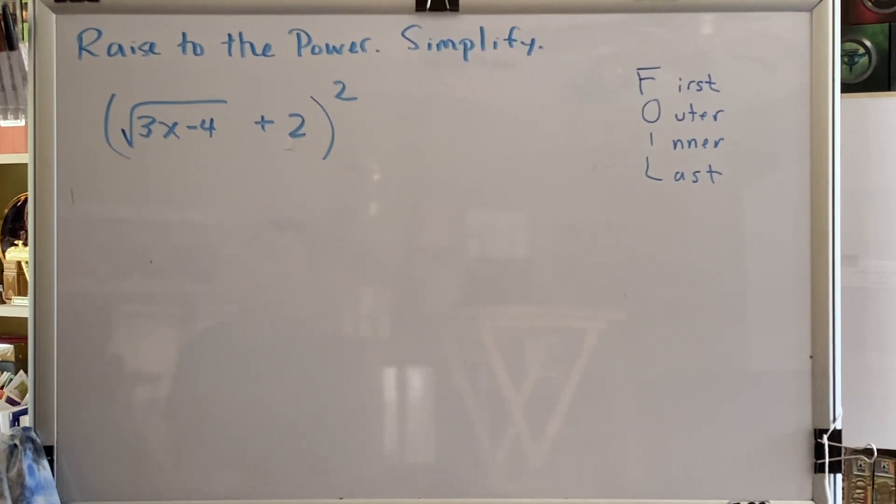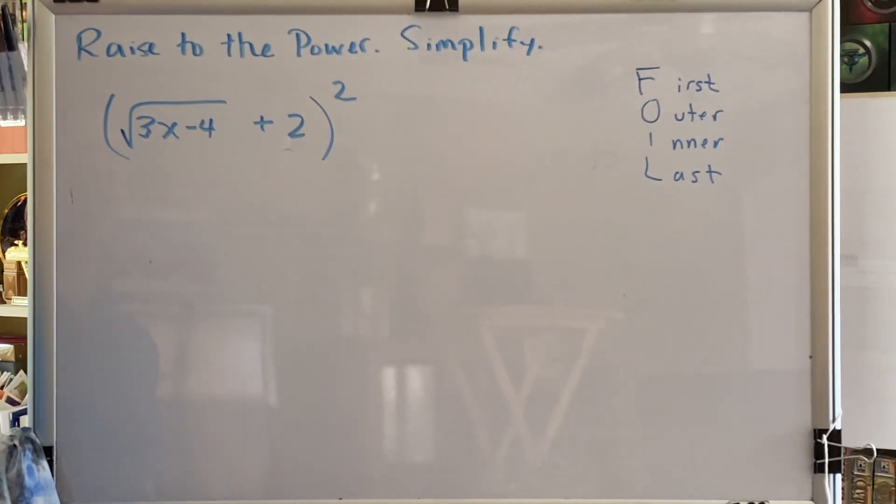Let's look at a problem. Raised to the power, simplify. We have the square root of the difference 3x minus 4, plus 2, all in parentheses, squared.